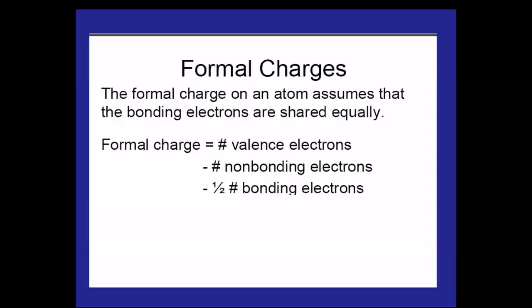Formal charge assumes that the bonding electrons are shared equally. That's not true, because they have different electronegativities. Here's how you calculate the formal charge. It is the number of valence electrons in the bonding. In other words, what have you got? You've got two oxygens. You've got six valence on one and six valence on the other. And so you've got 12 valence electrons. You subtract the non-bonding electrons. And then you subtract half of the bonding electrons.